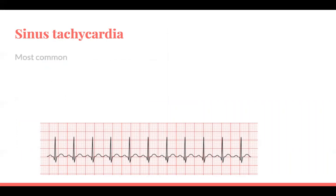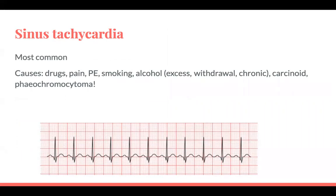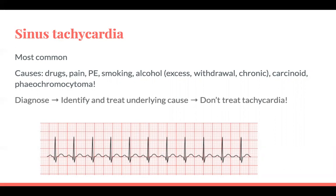Sinus tachycardia is the most common cause. There are lots of drugs and other causes — alcohol excess, withdrawal, chronic intake, pain, carcinoid, phaeochromocytoma, and other endocrine causes. The key with sinus tachycardia is: diagnose that it's sinus, identify and treat the underlying cause, but don't treat the tachycardia alone. Don't give beta blockers, because if they're compensating their blood pressure with tachycardia, their blood pressure will drop and they'll decompensate.